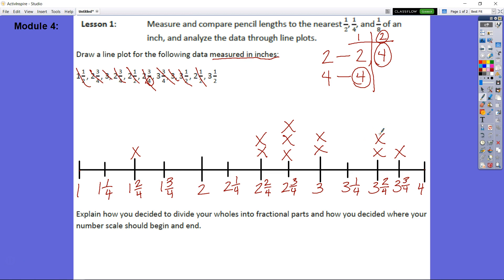Once again, with the bottom part, it says explain how you decided to divide your wholes into fractional parts and how you decided where your number scale should begin and end. So the reason why I divided my wholes into fractional parts of fourths is because my lowest common denominator is going to be fourths. I know that I have to have fourths. Now, if I had one of these numbers that was eighths, I would have had to go all the way out to eighths, which would give us an even more accurate measuring when we were measuring our pencils in this case.